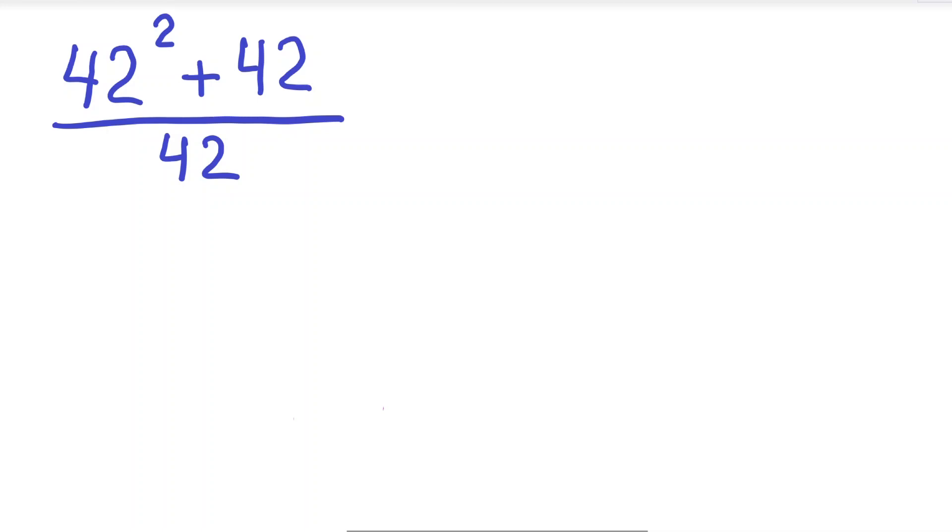So what do we do? You may think we can cancel out the 42 since it's common on both the top and bottom. But this 42 here is being divided, and you can only cancel out something being divided by something being multiplied.